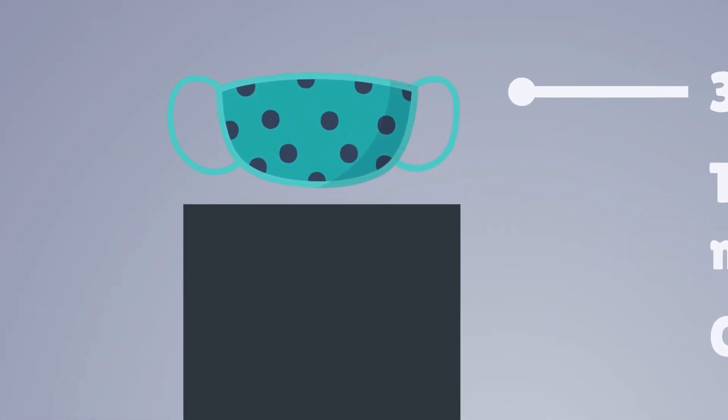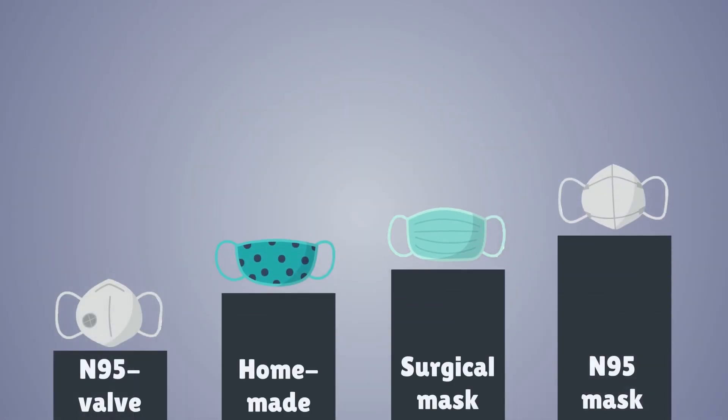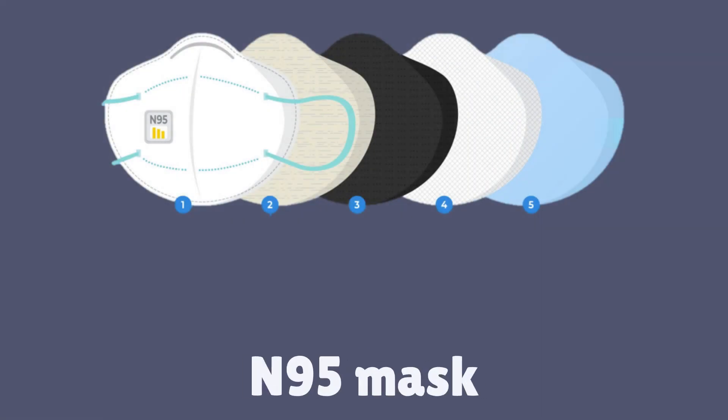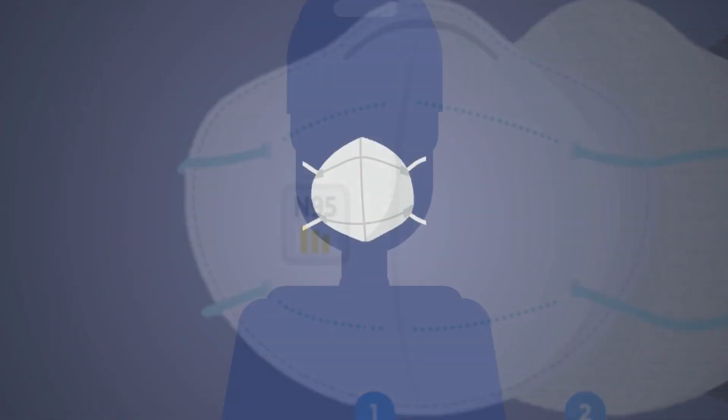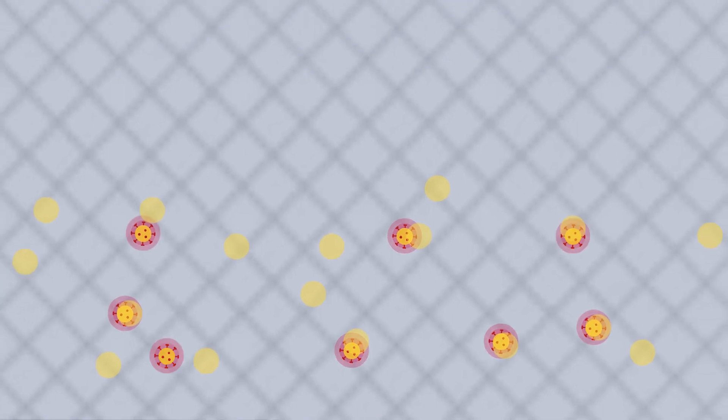So what's the difference between the N95 mask, the surgical mask, and the homemade mask? The N95 mask, or respirators, get their name because these masks are supposed to filter out 95% of particles, and they are tightly fitted around your face. They are effective in part because they have electrically charged fibers that attract and capture airborne virus-carrying particles. They get stuck and filtered out and cannot pass through.